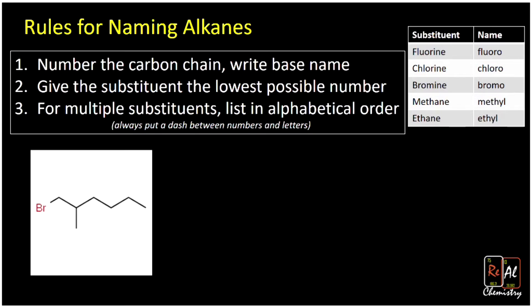For the next molecule we need rule three: for multiple substituents, list them in alphabetical order. Let's number the carbons: one, two, three, four, five, six. We have two substituents — a bromine, and a carbon group hanging off as a methyl. It's not heptane because we can't make one continuous chain of seven; the methyl is hanging off carbon two. We put CH3 there as a reminder. The other numbering direction gives substituents at five and six, which is worse, so we use one and two.